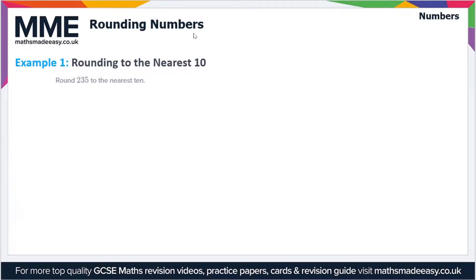Welcome to the Maths Made Easy tutorial on rounding numbers. This is the second video on the topic, and we're just going to go through some example questions here. The first one we have to round 235 to the nearest 10.